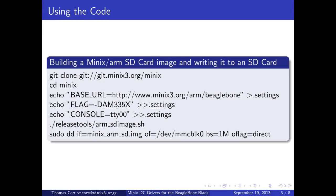Step 1 is to get the source code by cloning the MINIX Git repository. Next, we'll create a .settings file with board-specific settings. Third, we'll run the SD card image script to build a cross-tool chain, cross-compile MINIX, and construct an SD card image. This could take a while, depending on your hardware. Finally, we write the SD card image to the actual SD card.